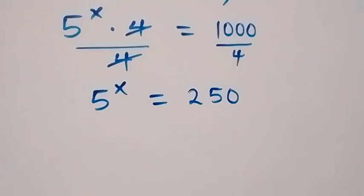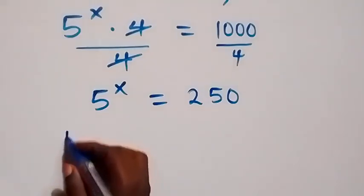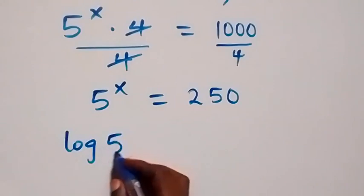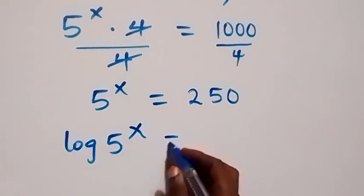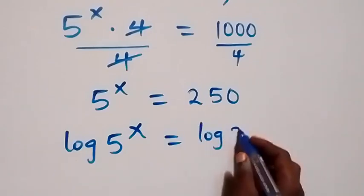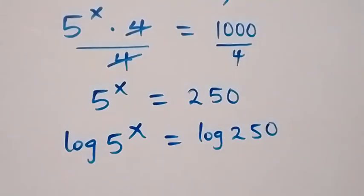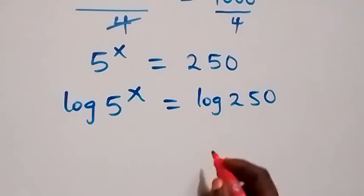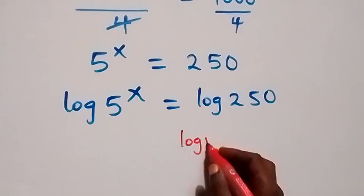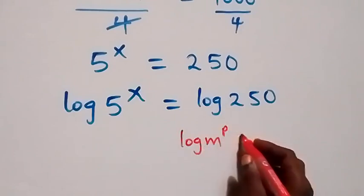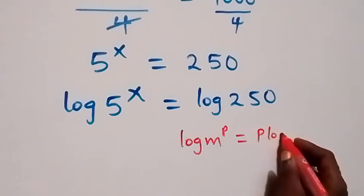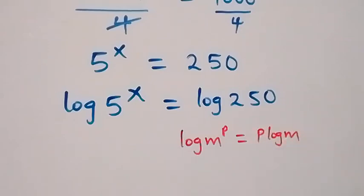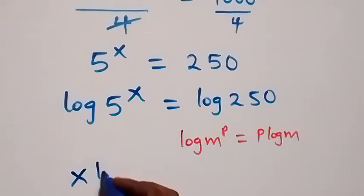The next step: we take the log on both sides, so we have log of 5 raised to power x equals log of 250. Using the power law of logarithms — when we have log(m raised to power p), this becomes p·log(m) — the x comes to the front, giving us x·log(5).